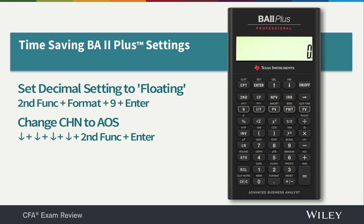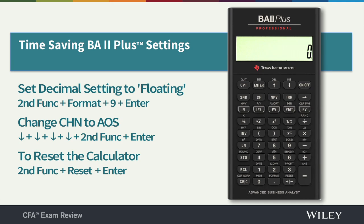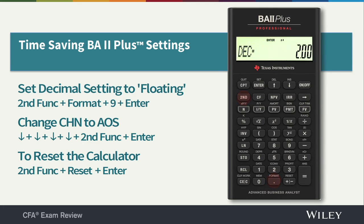What happens if you reset your calculator or replace the battery? During the exam, proctors may pick up your calculator and reset it — that's a worst-case scenario — or maybe you inadvertently do it yourself. I'll show you how to reset the calculator back to factory mode: press Second Function Reset, and the calculator will ask you to confirm. Hit Enter and the calculator is reset. Press Second Function Quit to return. Notice it now shows two decimal places — the default is back. Quickly go back into Format, change decimals to the floating decimal, scroll down and change CHN to AOS, then Quit. You're done.